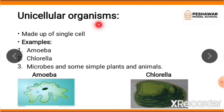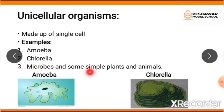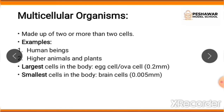Unicellular organisms are those organisms which are made up of a single cell. Examples of unicellular organisms include amoeba, cholera, and a few microbes and some simple plants and animals. The diagrams of amoeba and cholera are both shown on screen so you can see how each one looks.